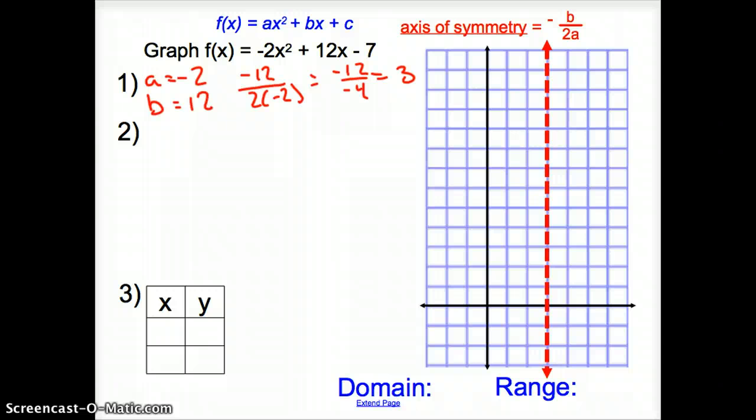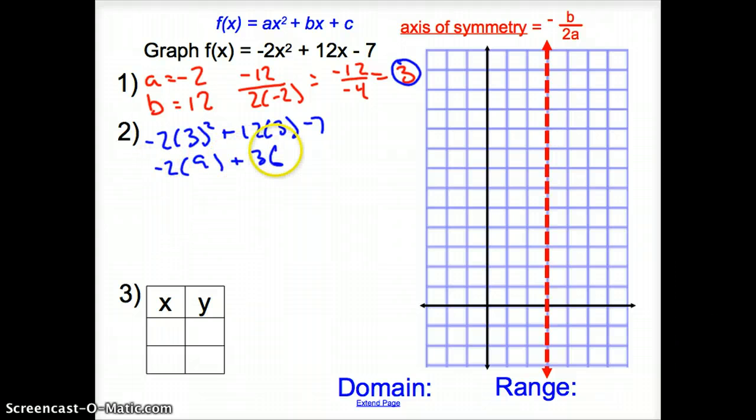Now, using the 3 that we just found, using this 3, I'm going to plug it in to the given function. So, we have a negative 2 times 3. That's going to be squared, plus 12 times 3, minus 7. Simplifying, I get negative 2 times 9, plus 36, minus 7. Keep going with it. It's negative 18, plus 36, minus 7, equals 11. So, now, I've found my vertex.